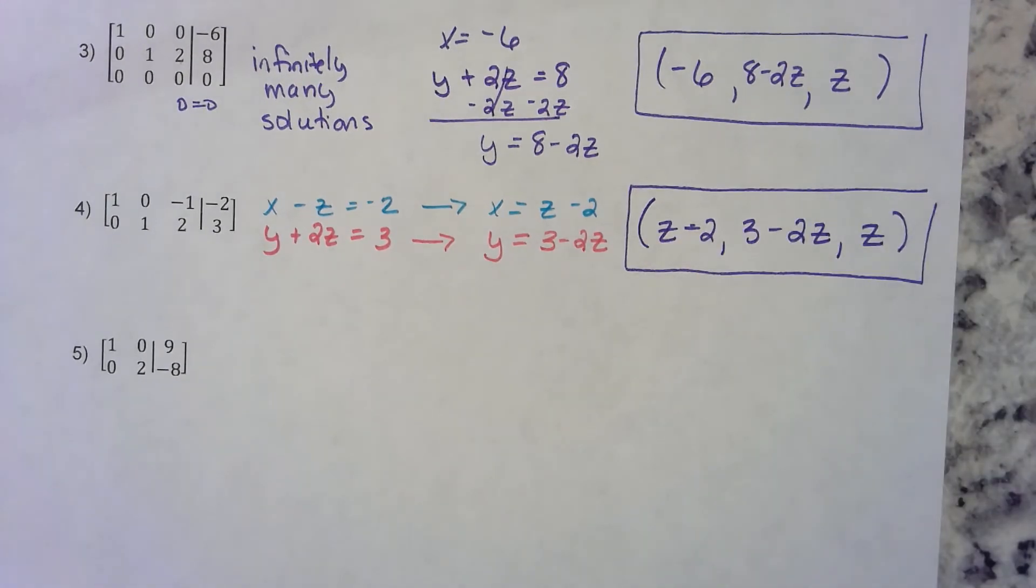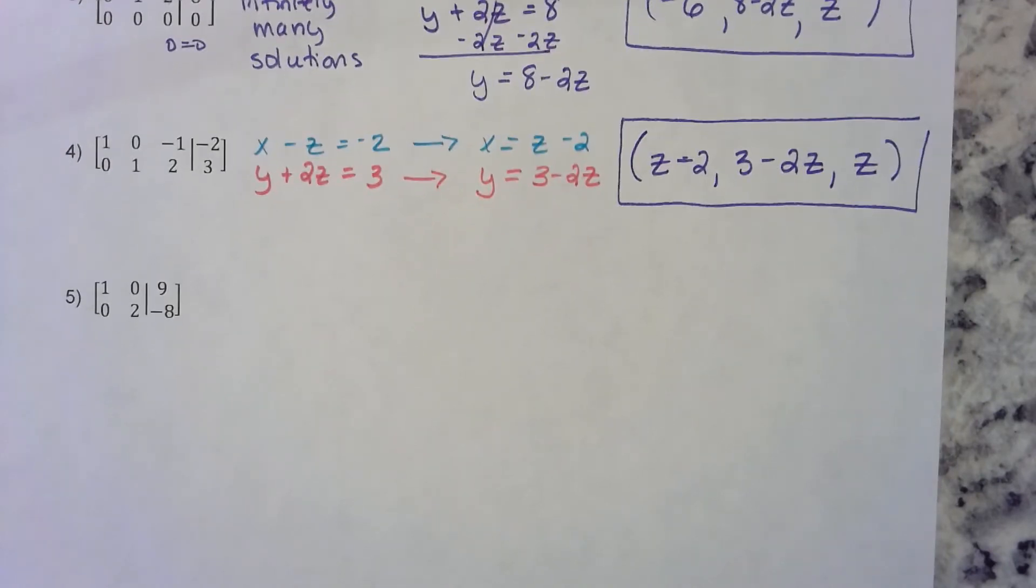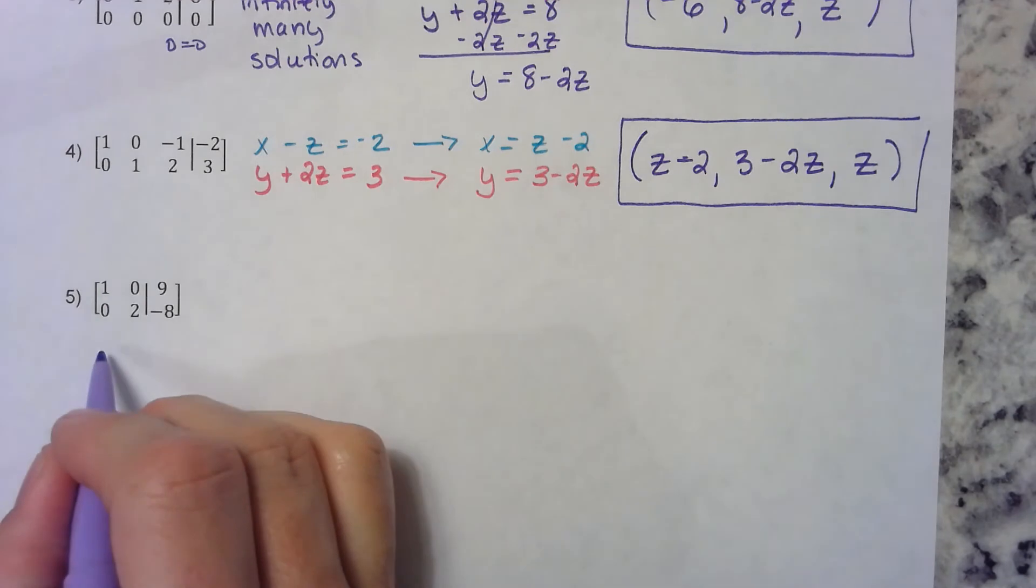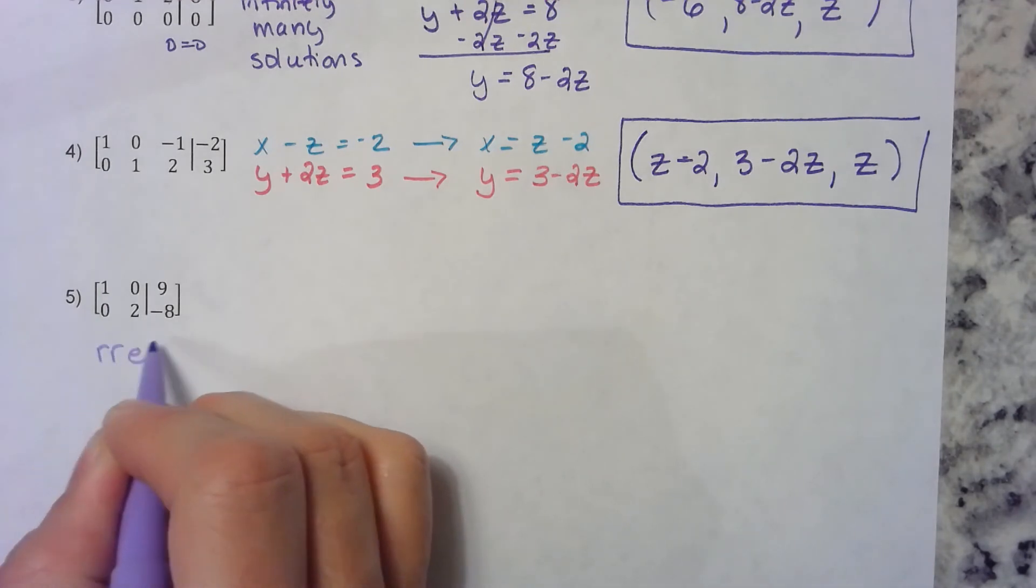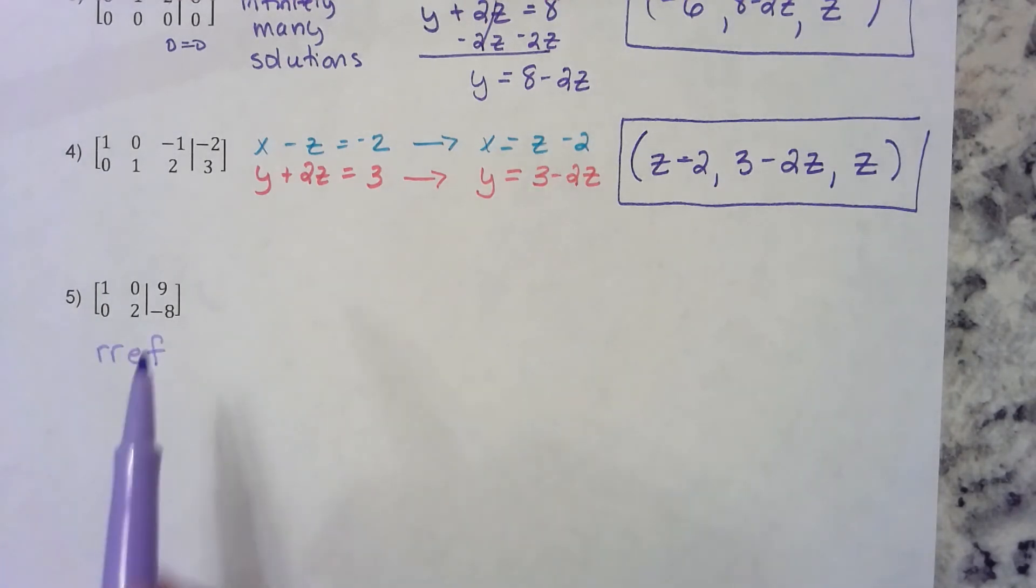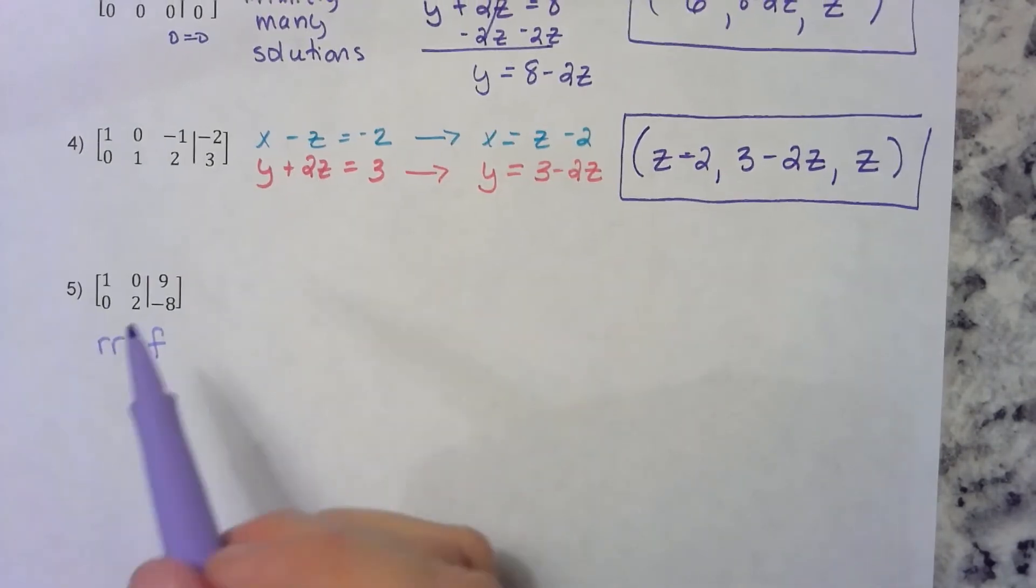Number five: what would it mean if you saw that on your calculator? It would mean that it's not in reduced row echelon form. This is just in row echelon form. That just means that there's not a 1 right there. We need that to be a 1.